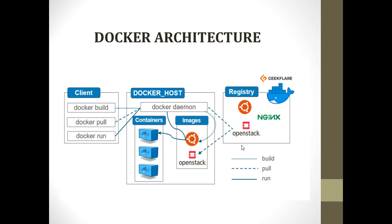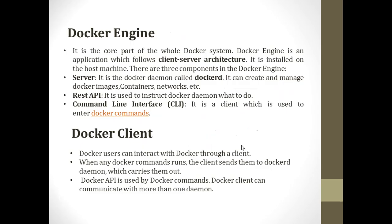To learn about the architecture of Docker, there is a need for a Docker client, a Docker host, a Docker registry, containers, images, and Docker daemon. We will learn all these components one by one. The Docker architecture is based on a client-server approach. You need to install the Docker engine on the host machine, and the Docker engine consists of three components.